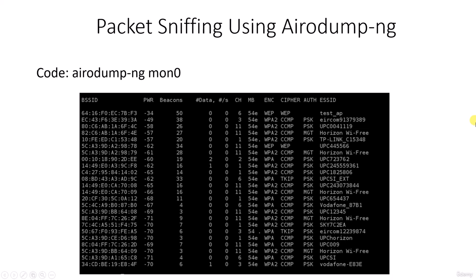You can see BSSID, power, beacon data, cipher, authentication, and ESSID all listed. There is a test router very close to me — you can see it shows around minus 34, which is strong. As you scroll down you see networks that are farther away. The closer the network is to you, the easier it is to sniff packets. Also, for all the attacks we'll explain in the future, the closer the network, the more effective and quicker the attack will be.